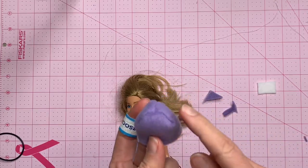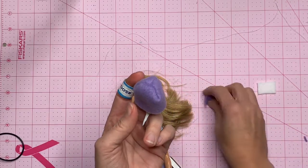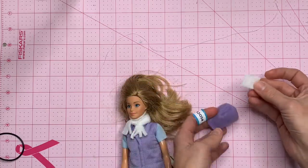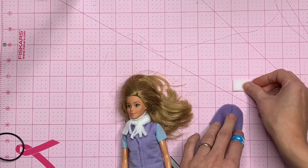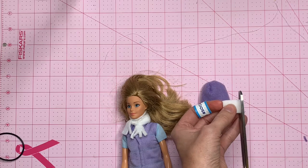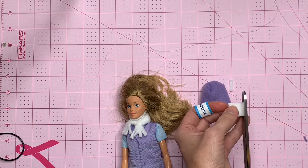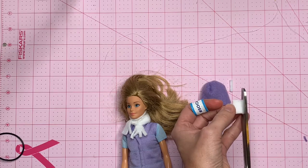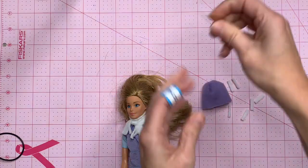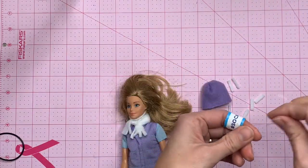Now you can just get a pom-pom like a store-bought pom-pom and glue it on here or sew it on, or you can do what I'm doing. I'm using a 1-inch by 3/4-inch piece of fleece and I'm going to cut it in small strips.